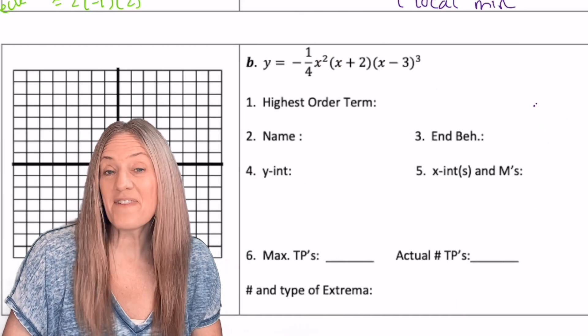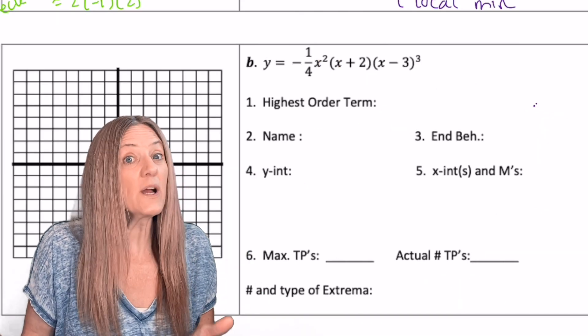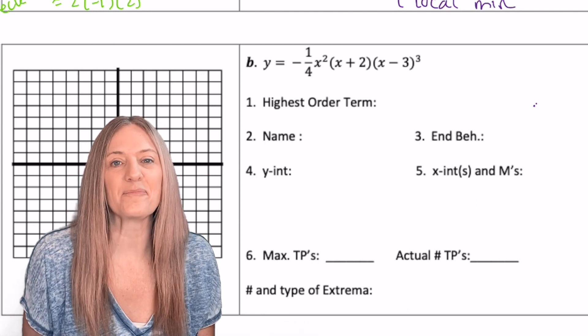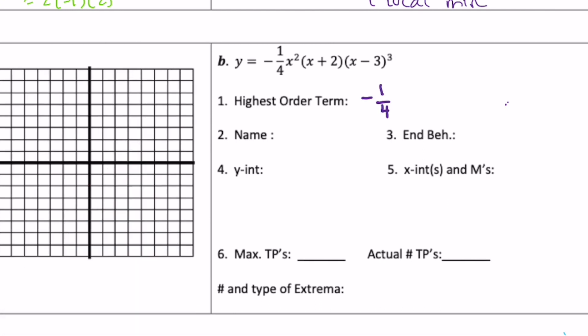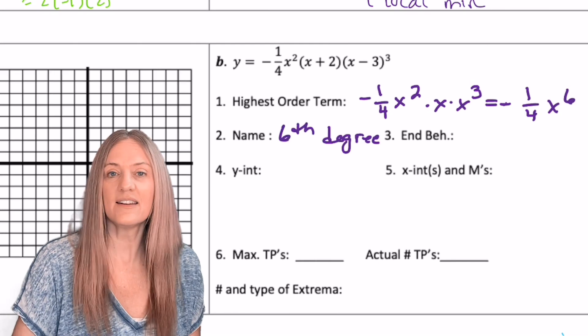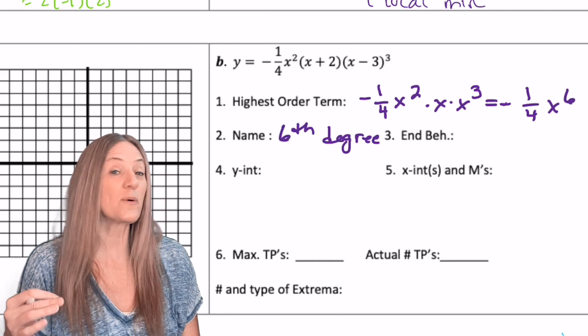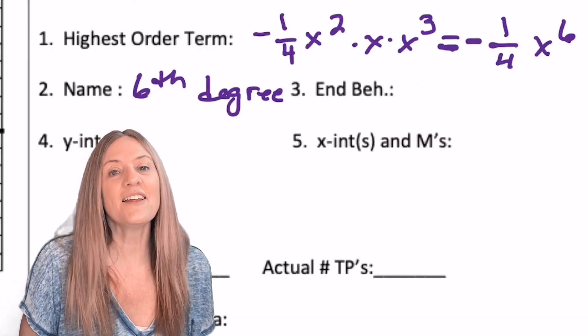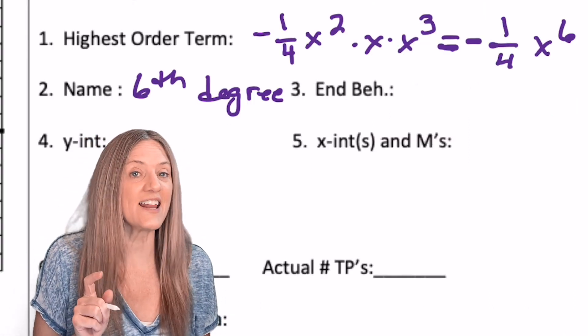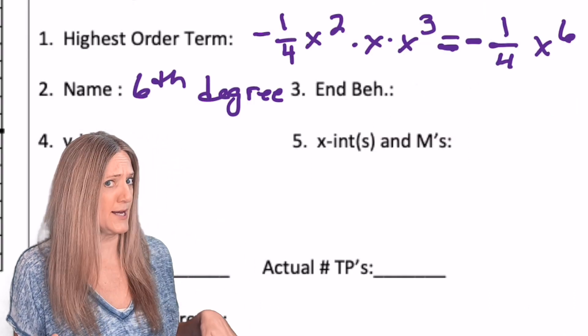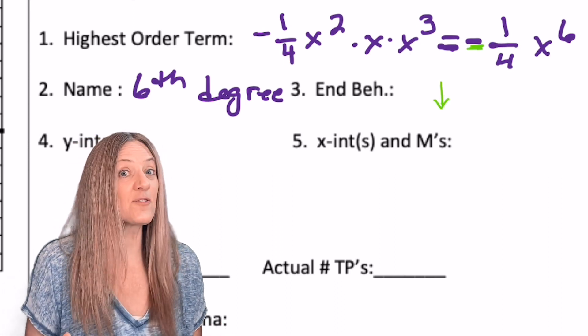Example B, go ahead and find the highest order term and then fill in what you can from that. Pause the video. Negative one fourth x to the sixth. So we have a six degree polynomial. End behavior. Well, the leading coefficient is negative. So we know the end of the story is down. Even degrees, so they behave the same.